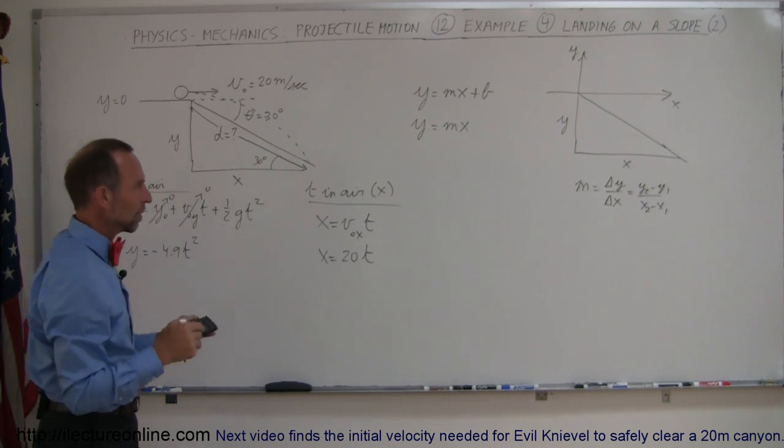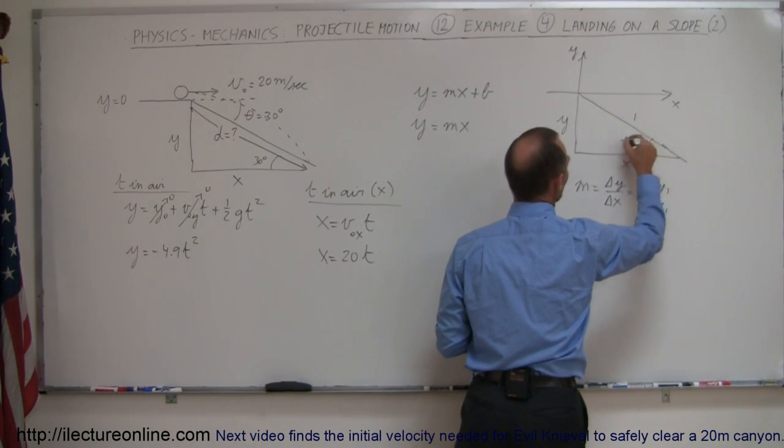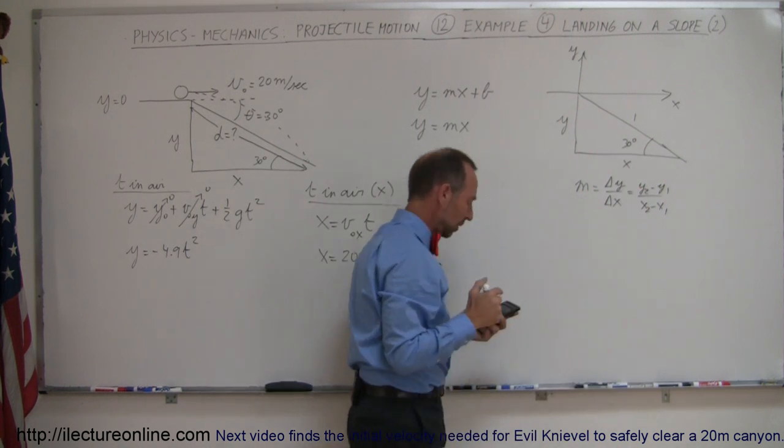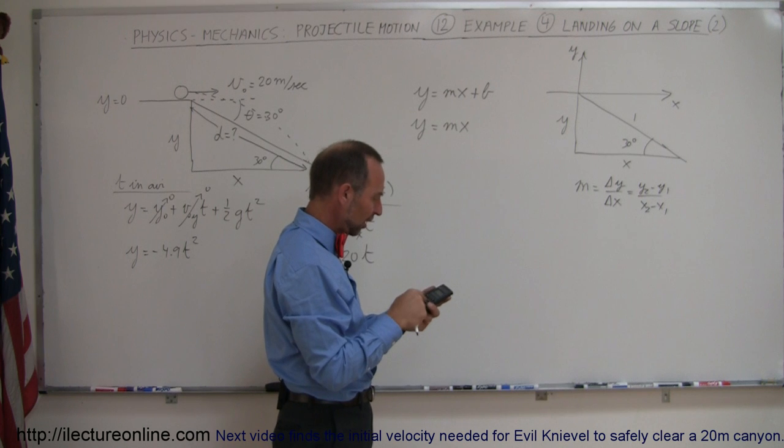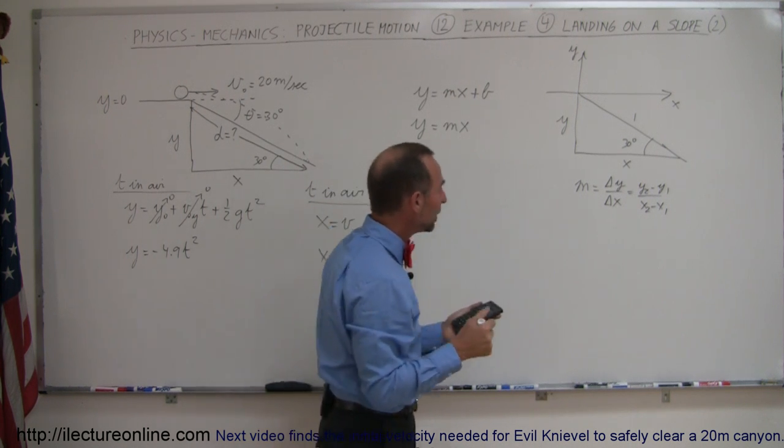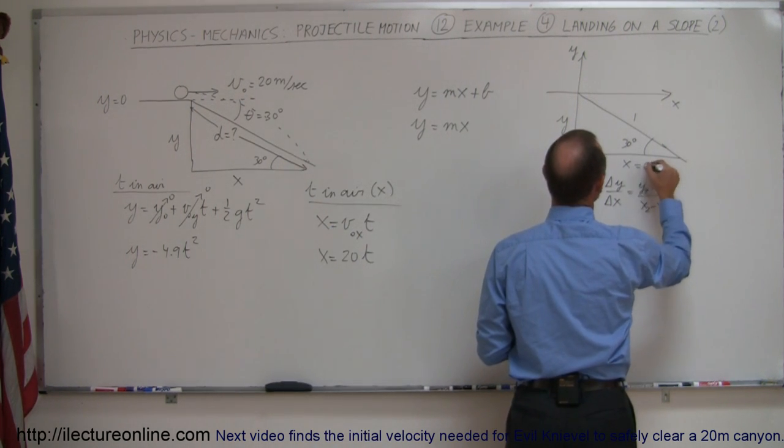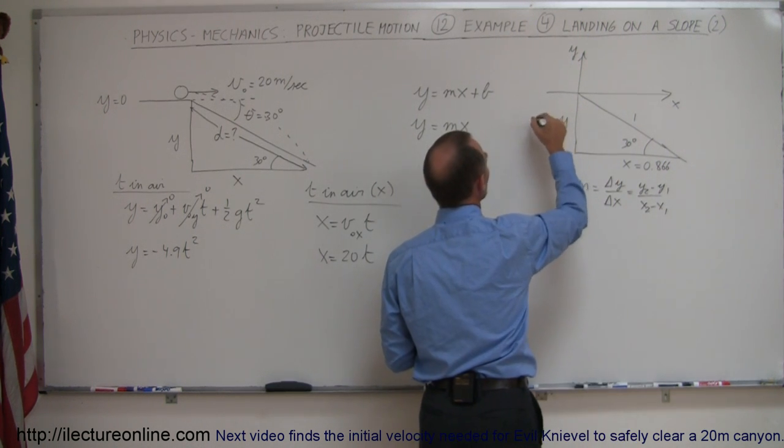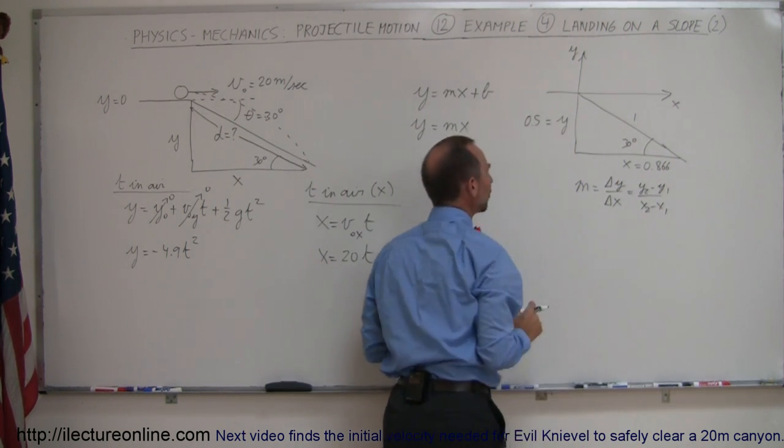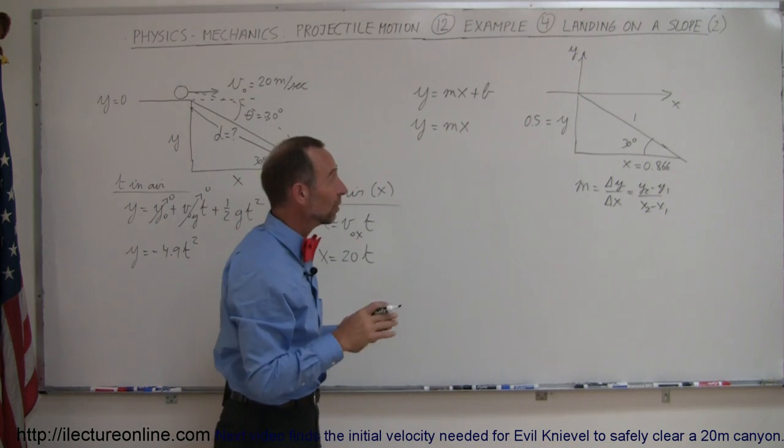So in our triangle, if we call this equal to 1, and we know that this angle is 30 degrees, then we can say that x will be the cosine of 30 degrees, which is 0.866, so this will be 0.866, and on the opposite side, that would be equal to 0.5. So now we have a relationship between x and y.